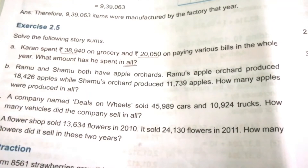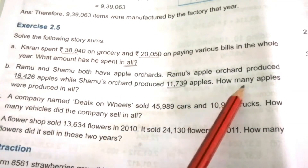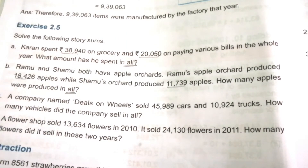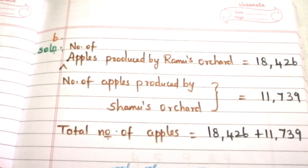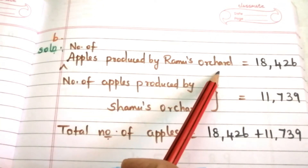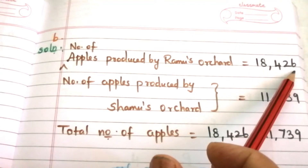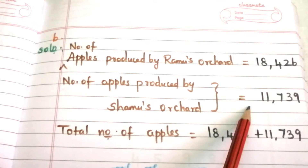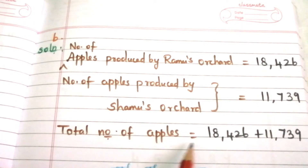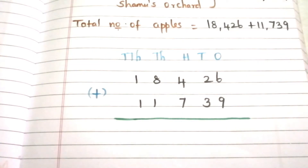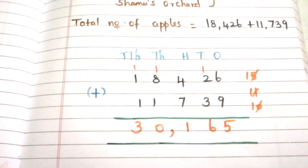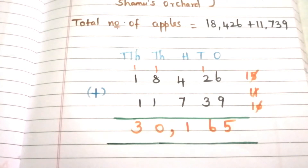Problem B (apples): The two given data values are provided. Our question is: how many apples were produced in all? The keyword 'all' indicates addition. Number of apples produced by Ramos Orchard = 18,426; by Shamos Orchard = 11,739. Total = 18,426 + 11,739. Writing both numbers vertically and adding, we get 30,165. Thus, 30,165 apples were produced in all.